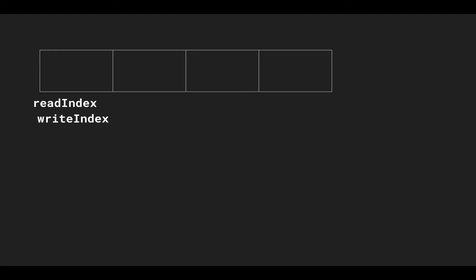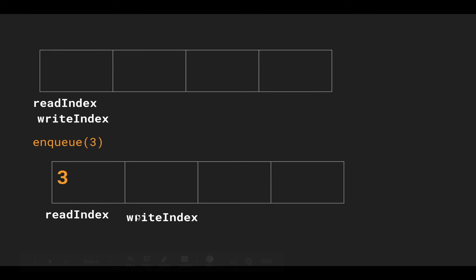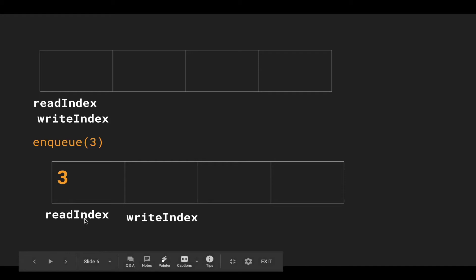Going with an example: let's say we want to enqueue 3. We're going to enqueue 3 at the write index — insert 3 there — and then advance the write index for the next enqueue operation. We don't want write index to remain there because then it would overwrite 3. We leave the read index pointer because we haven't dequeued 3 yet. So when we dequeue, read index will be ready to pull 3 from that location.